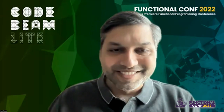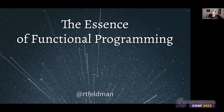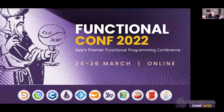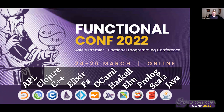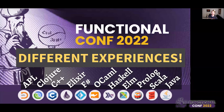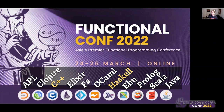Thank you. This is the Essence of Functional Programming. I'm Richard Feldman. We're here at Functional Conf 2022, and as Naresh mentioned, there are a lot of different programming languages represented here — APL, Clojure, C++, Elixir, F-sharp, OCaml, Haskell, Elm, Prologue, Scala, and Java, and even more at the conference. You're going to get a different experience doing functional programming in each of these languages, leading to different expectations. For example, Haskell versus C++ is just a very different experience.